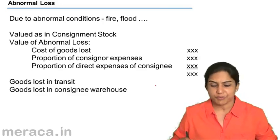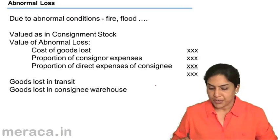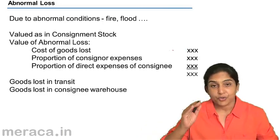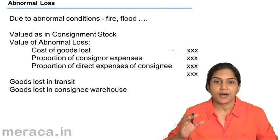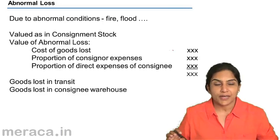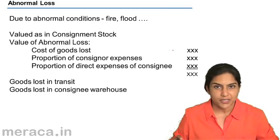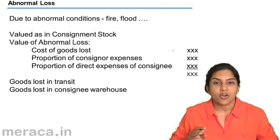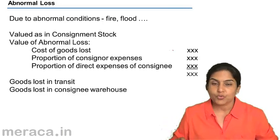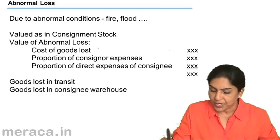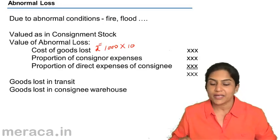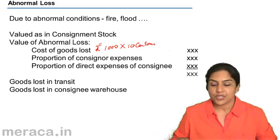What is the valuation of this abnormal stock? First, we take the purchase cost of the goods lost. In our original example, Mukta was sending 100 cartons of clothes to Kantha of Kanpur at a cost of 1,000 rupees per carton. If 10 units are lost in transit due to some theft or abnormal condition, the purchase cost would be 1,000 × 10 = 10,000 rupees.